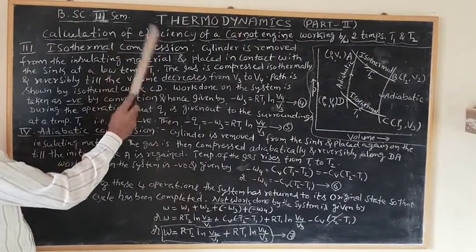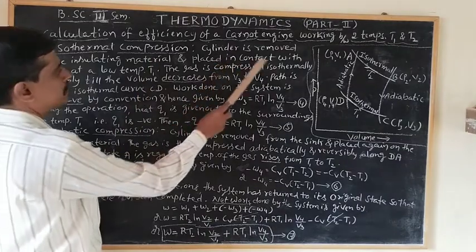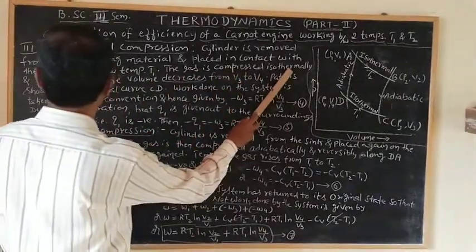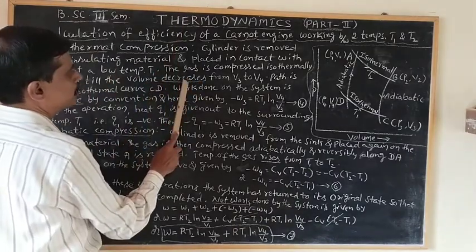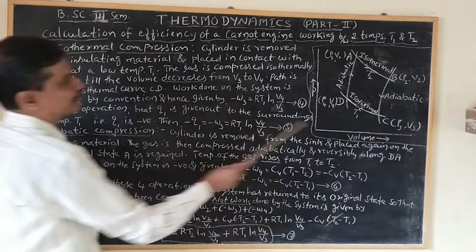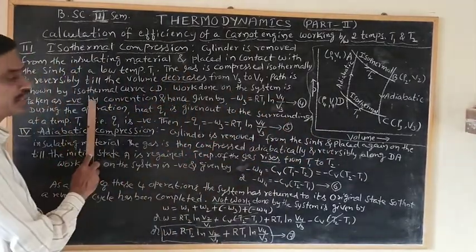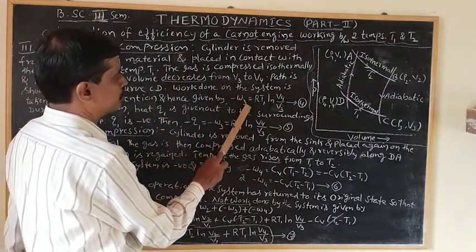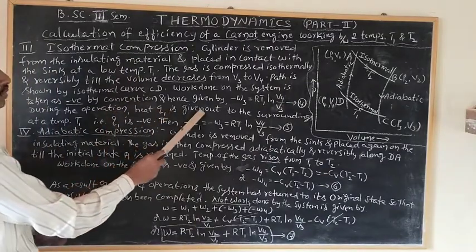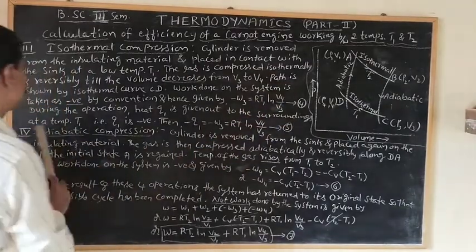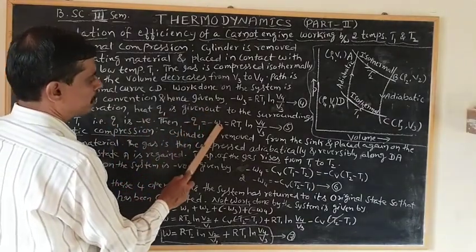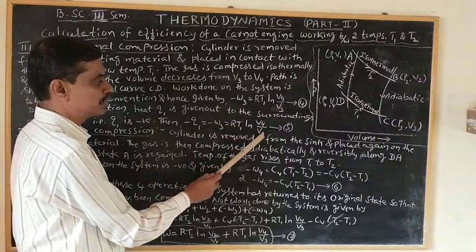Third is isothermal compression. The cylinder is removed from the insulating material and placed in contact with the sink at a lower temperature T1. The gas is compressed isothermally and reversibly until the volume decreases from V3 to V4. The path is shown by the isothermal curve CD. Work done on the system is taken as negative by convention: −W3 = RT1 ln(V4/V3). This is equation 4. During this operation, heat Q1 is given out to the surroundings at temperature T1, so Q1 is negative: −Q1 = −W3 = RT1 ln(V4/V3). This is equation 5.